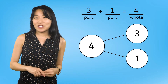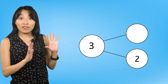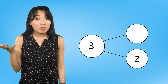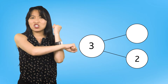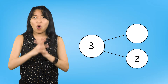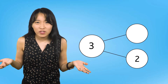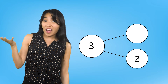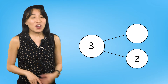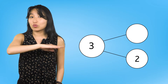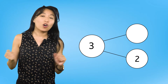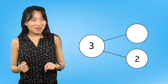Let's take a look at a new problem. Look at this number bond. We have the whole and only one part. If addition sentences are part plus part equals whole, how can we solve this problem when we're only given one part? To find our answer, we will need to use subtraction to decompose, or break apart, the whole.